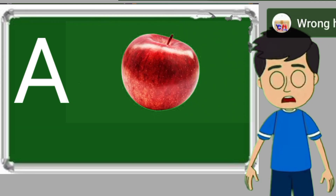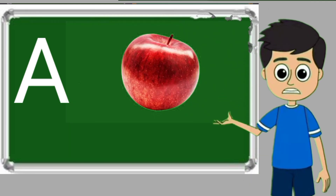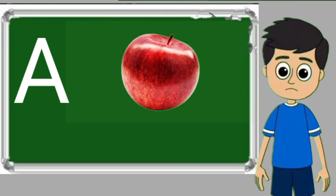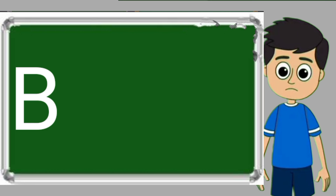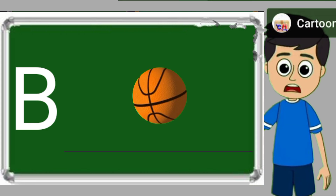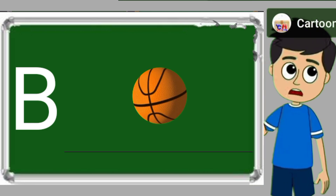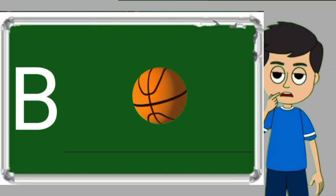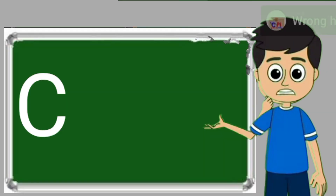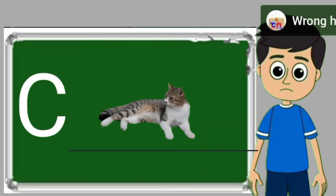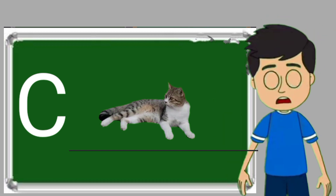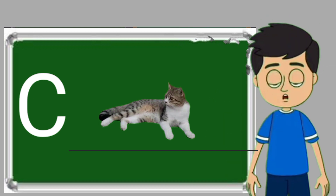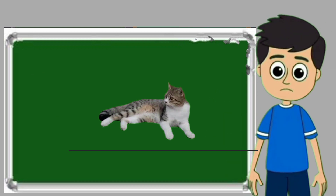A for apple. Apple means save. B for ball. Ball means gain. C for cat. Cat means billy.